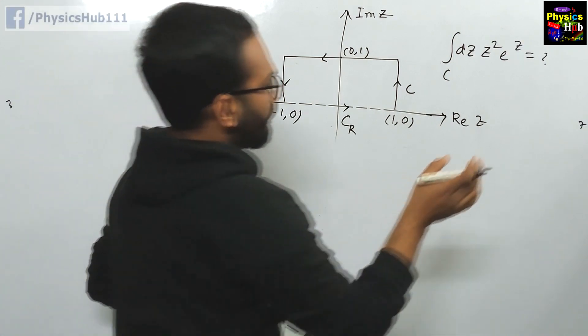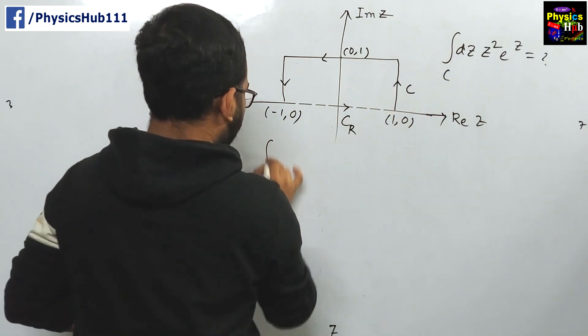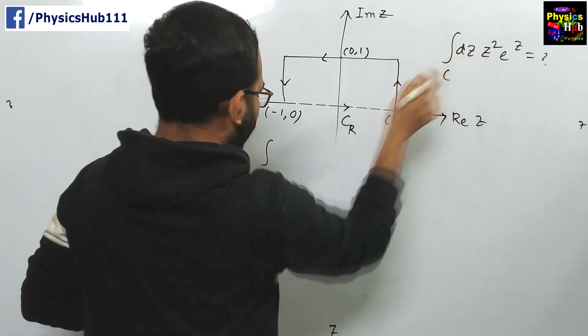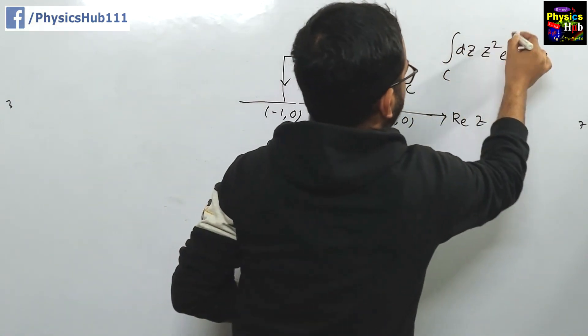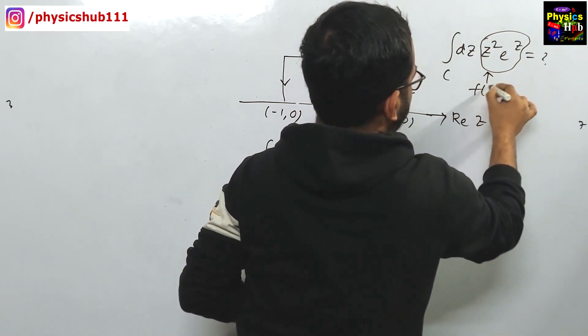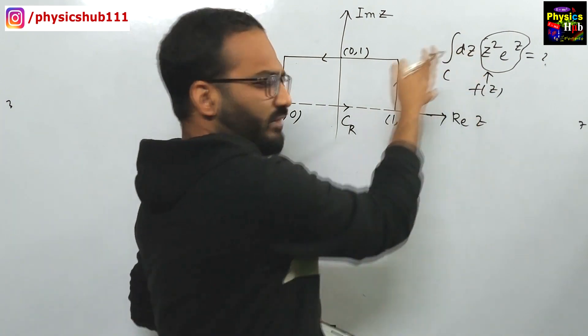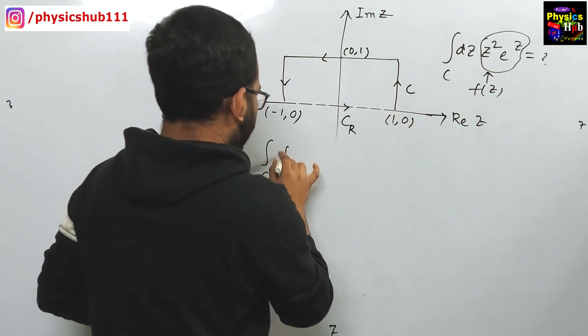Before we calculate this one, we can just extend the contour C which was given. Let's say this whole thing is f(z). This function we are writing as f(z), we don't want to write it every time, so we are denoting it by f of z.